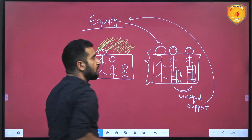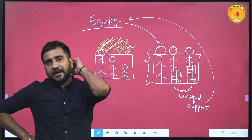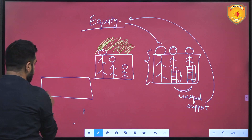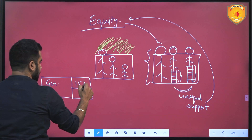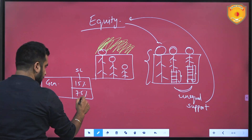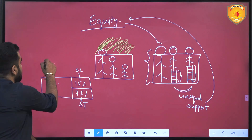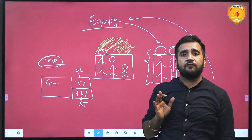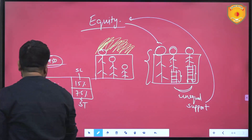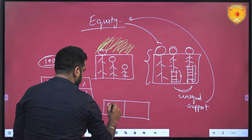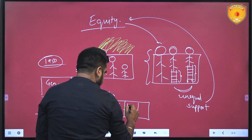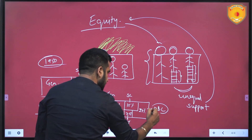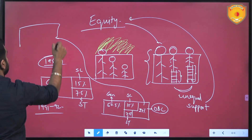The entire reservation system is premised on this concept of equity. Reservation was initially given to Scheduled Castes and Scheduled Tribes — 15% to SC and 7.5% to ST, with the remainder being general. This was the situation in 1950, and reservation was originally given for 10 years. Some members in SC and ST were able to take advantage of reservation, but some were not. Then in 1992, a third category was introduced: 50.5% general, 15% SC, 7.5% ST, and 27% OBC.